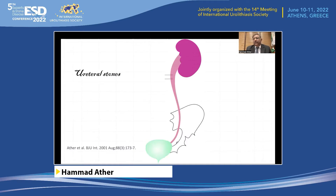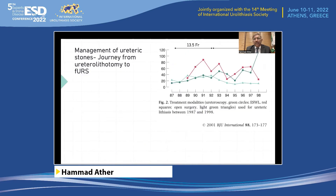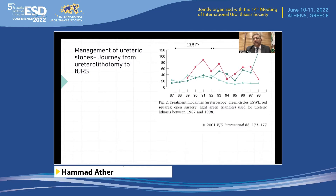Let's talk about the treatment of stones in various locations, which is the theme of the major bulk of our work. Ureteral stones are perhaps the most commonly treated pathology in the majority of urological centers around the country, being in the stone belt. Looking at data from 1987 to 1998, we noted that the numbers of ureterolithotomy gradually started to go down. Lithotripsy was introduced in our hospital in 1989, and at that time we started to see a surge towards more lithotripsy.